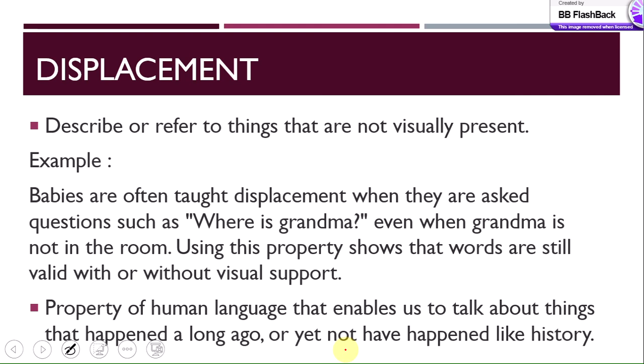Next is displacement — the ability to describe or refer to things that are not visually present. Human language has the capacity to talk about things which are not present in time or space. Animal languages are only applicable in the immediate context — if a dog barks, it is for that certain moment — but human language can talk about things that happened in the past or will happen in the future. For example, babies are often taught displacement when asked 'Where's grandma?' even when grandma is not in the room, showing that words are valid with or without visual support.